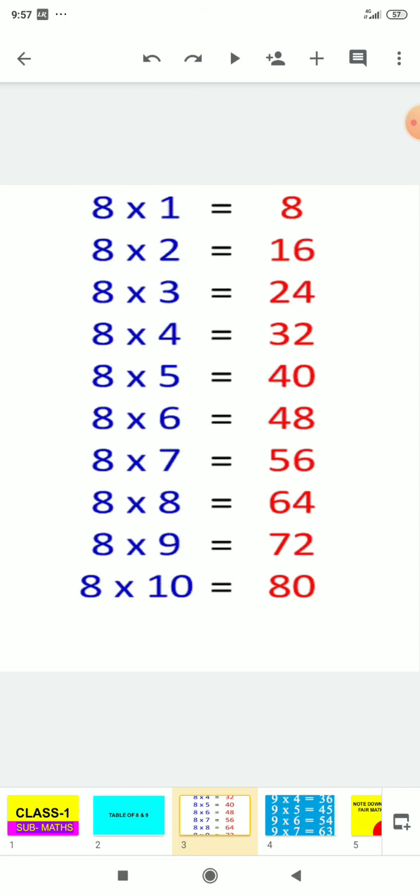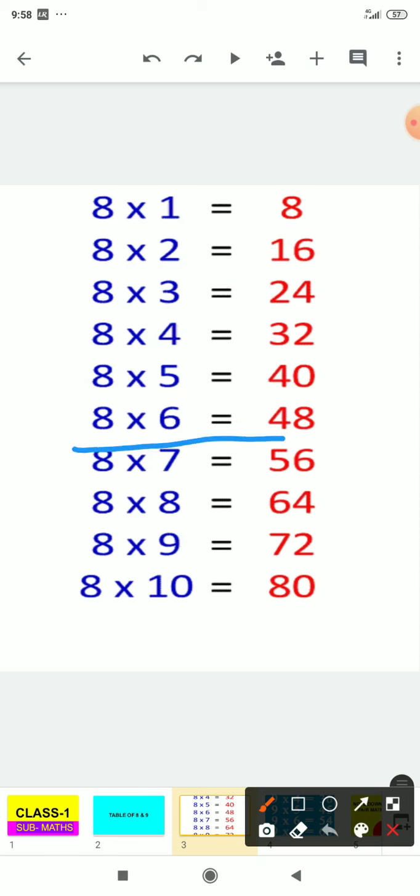I will tell you how to read the number table and then you again also read the table and then you have to learn it, okay. So let's start: 8 times 1 is 8, 8 times 2 is 16, 8 times 3 is 24, 8 times 4 is 32, 8 times 5 is 40, 8 times 6 is 48, 8 times 7 is 56.